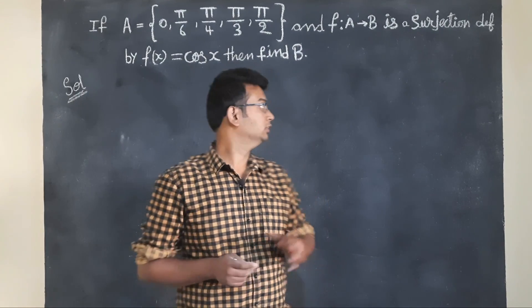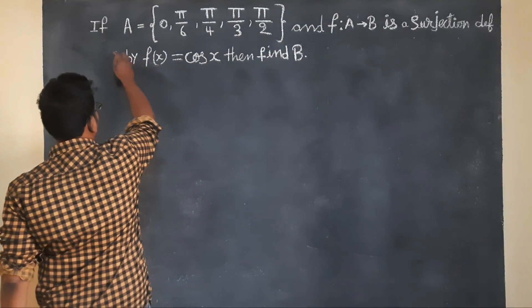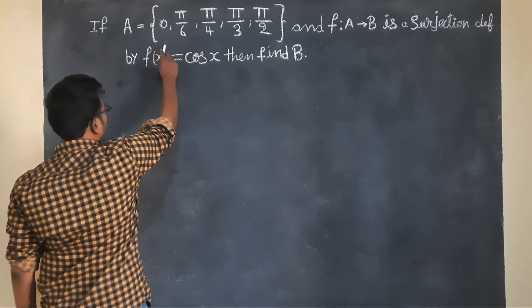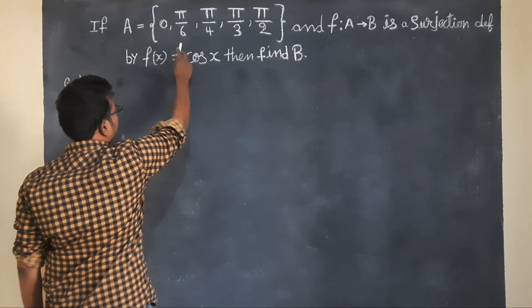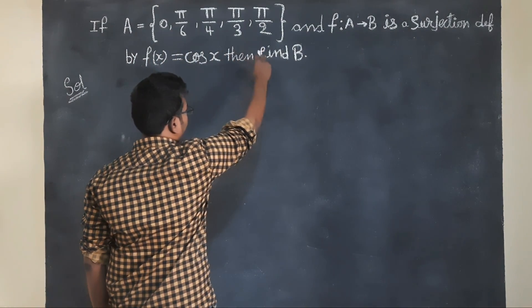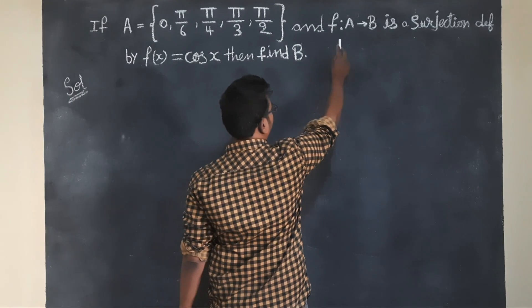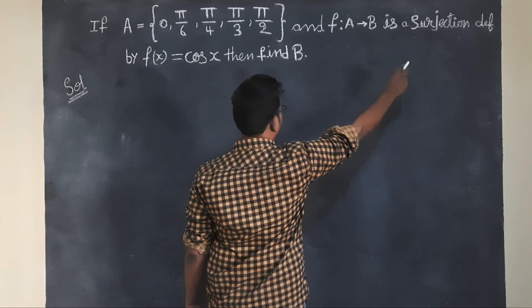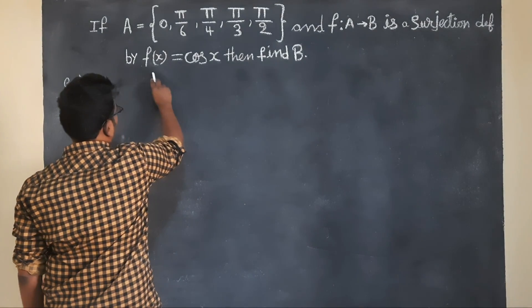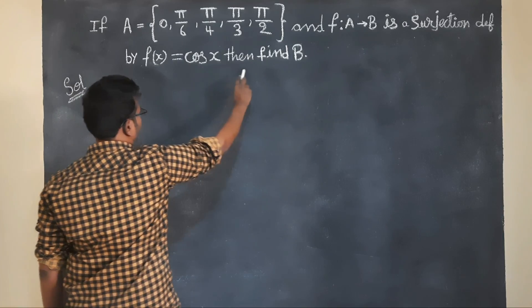First question, students: if A = {0, π/6, π/4, π/3, π/2} and f mapping A to B is a surjection defined by f(x) = cos x, then find B.